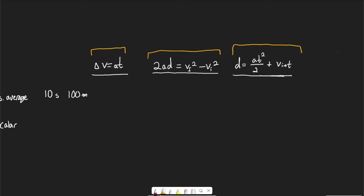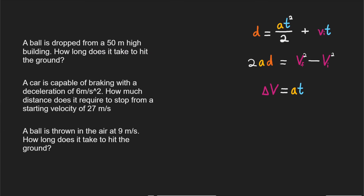I'll go ahead and rewrite these equations with colors so you can see what variables are being used in each. Then I'll write three story problems and show you which equation matches each one. I color-coded them so you can see distance, velocity, time, and acceleration based on the colors. To figure out which equation to use, write the knowns and then write the unknowns.